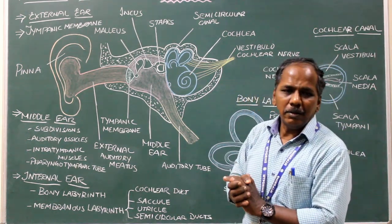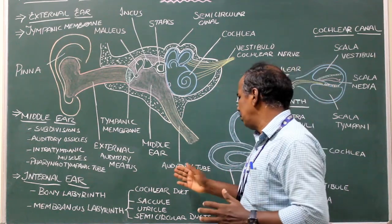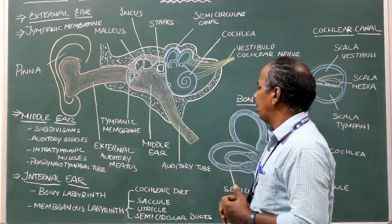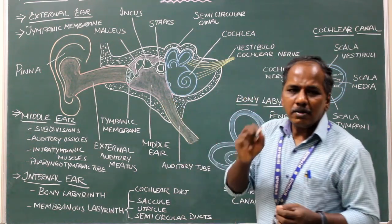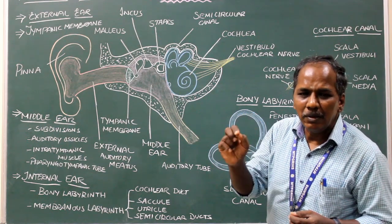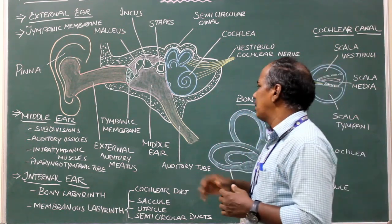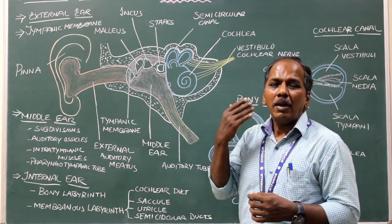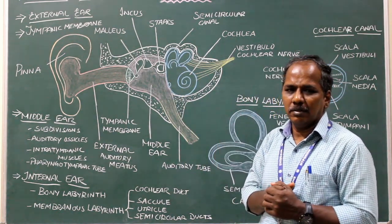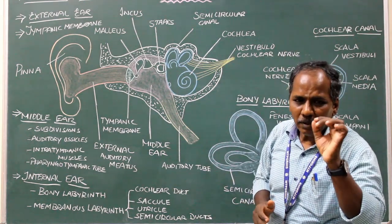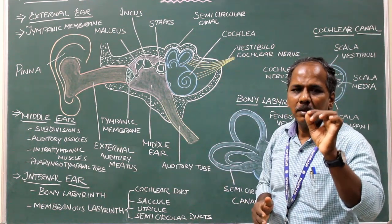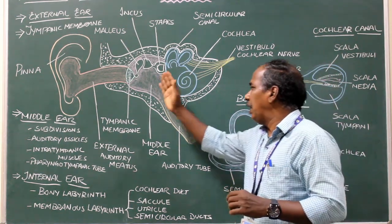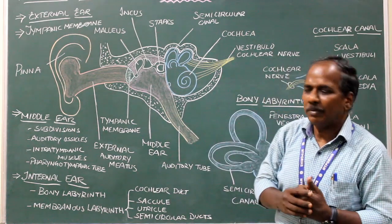Pharyngotympanic tube, or auditory tube, is an osteocartilaginous tube which connects the middle ear cavity (tympanic cavity) with the nasopharynx. It maintains the equilibrium of air pressure on either side of the tympanic membrane.